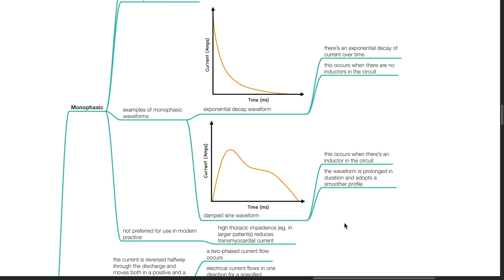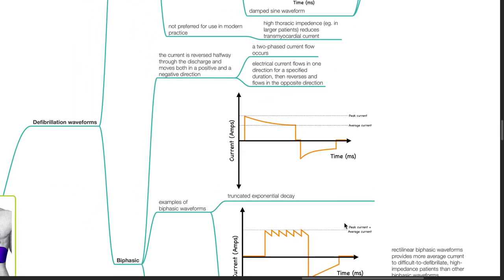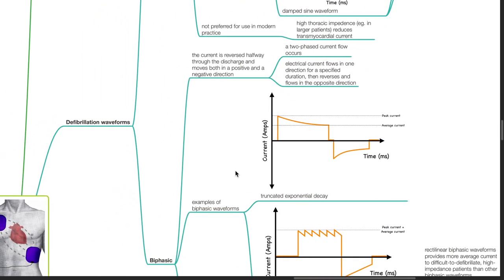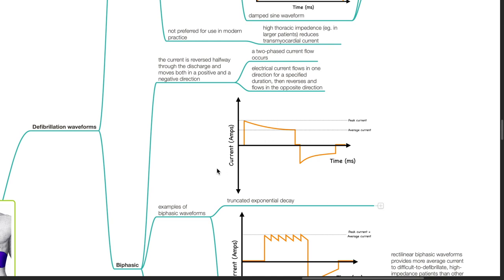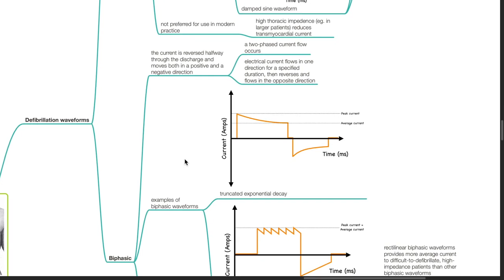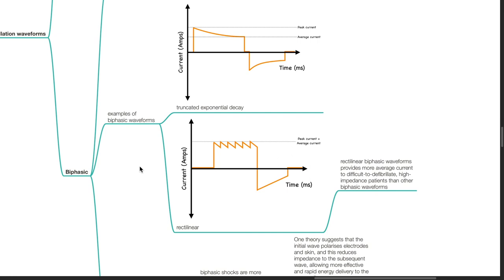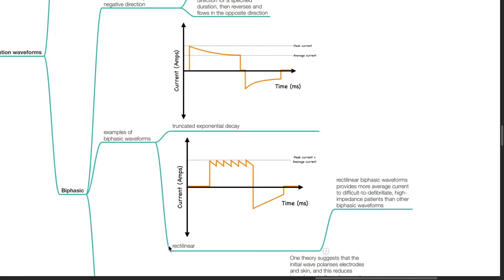High thoracic impedance, such as in larger patients, reduces transmyocardial current when monophasic waveforms are used. Biphasic waveform: the current is reversed halfway through the discharge and moves in both positive and negative directions. Electrical current flows in one direction for a specified duration, then reverses. Examples include truncated exponential decay waveform and rectilinear waveform. Rectilinear biphasic waveforms provide better average current delivery to difficult-to-defibrillate high-impedance patients than other biphasic waveforms.